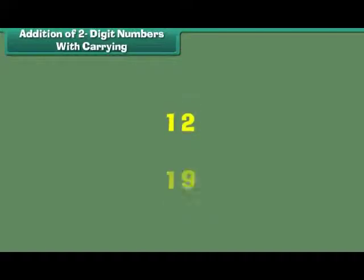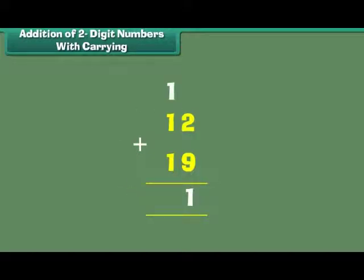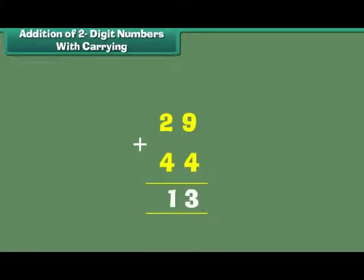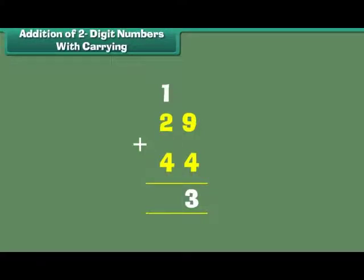Addition of 2 digit numbers with carrying. Another technique of adding two 2-digit numbers is through carrying. What is 29 plus 44? The digits at the 1s place are 9 and 4. 9 plus 4 is equal to 13. Write 3 at the 1s place and carry over 1 to the 10s place. The digits at the 10s place are 1, 2 and 4. 1 plus 2 plus 4 is equal to 7. Therefore, 29 plus 44 is equal to 73.